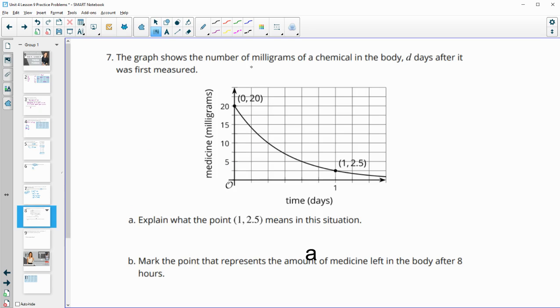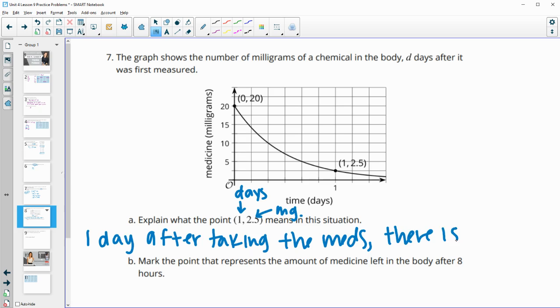Number seven, the graph below shows the milligrams of a chemical in the body D days after it was first measured. Explain what the point (1, 2.5) means. So remember that this X value is the days after it was administered, and the Y value is the milligrams left in the body. This would mean that one day after taking the medication, there is 2.5 milligrams left in the body.